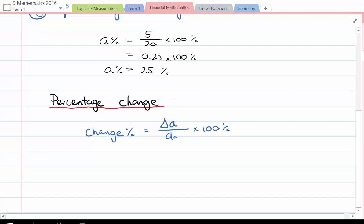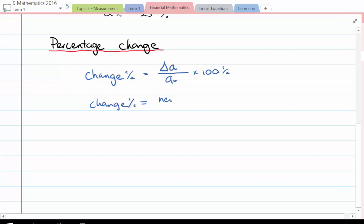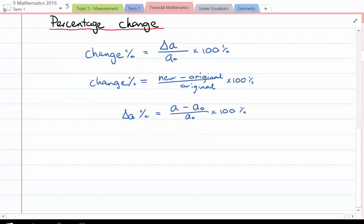We can look at that percentage change as the new amount subtract the original over the original and then multiply by 100%. So if we want to turn this into a simple to remember rule, then we'll have our change in percent will be the new value subtract the original, a subscript 0, over the original and multiply by 100%. Let's look at a little example.